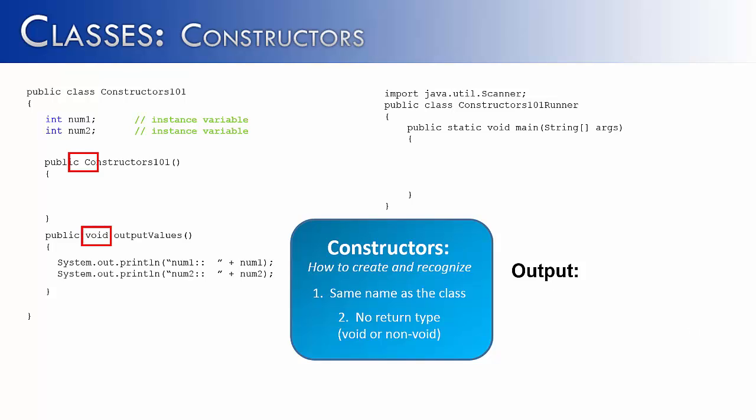Constructors are pretty easy to identify. They'll always have the same name as the class, and they will neither be void nor non-void, meaning they won't have a return type.